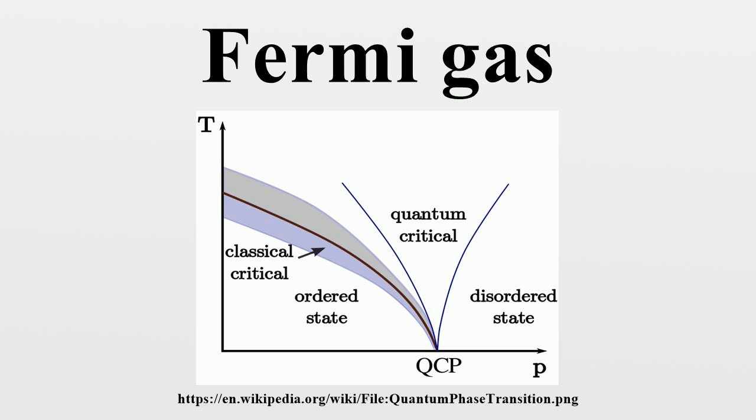The Fermi energy surface in momentum space is known as the Fermi surface. An ideal Fermi gas or free Fermi gas is a physical model assuming a collection of non-interacting fermions. It is the quantum mechanical version of an ideal gas, for the case of fermionic particles.